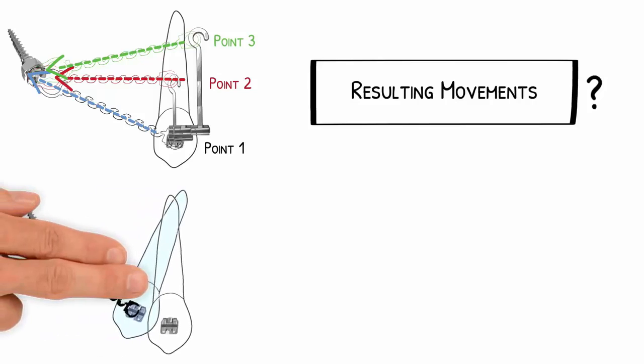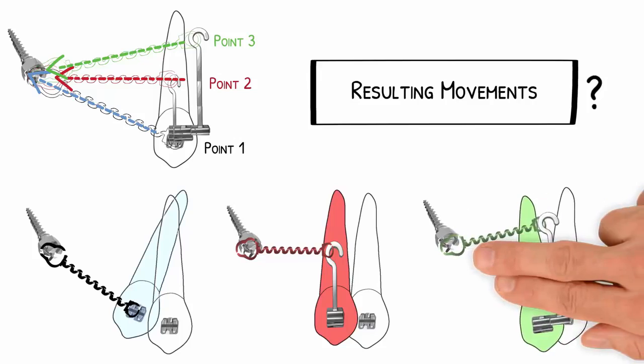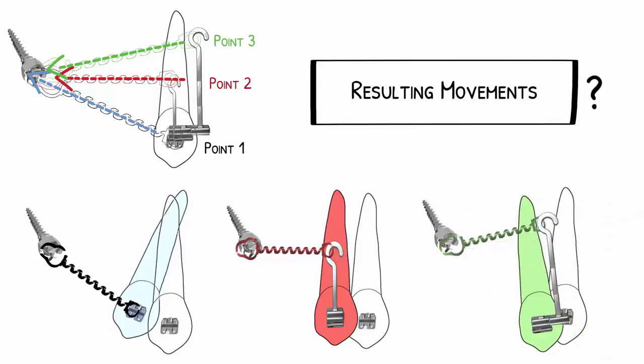If we apply force at point one, we will have a tipping movement, in which the crown will move more than the root, and the tooth will undergo slight intrusion. If you choose point two, the tooth will move with minimal change of its long axis, and without significant change in the vertical direction. And finally, the application of force at point three will cause slight extrusion and greater root movement.